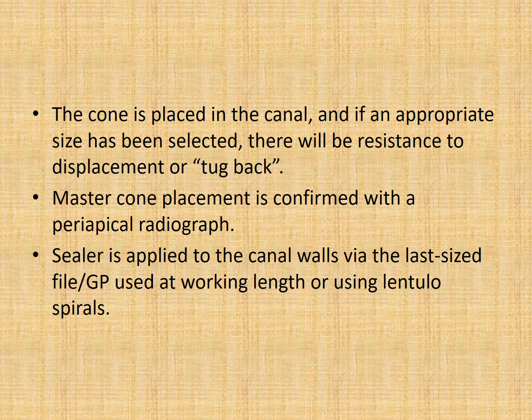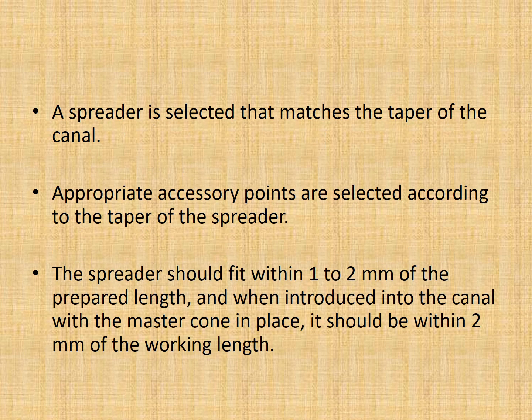Sealer is then applied to the canal walls via a large size file or GP up to the working length. You can also use lentillo spirals to coat the sealer to the walls. A spreader is then selected which matches the taper of the canal. Appropriate size accessory points are selected according to the taper of the spreader, though I prefer to use very small GP cones like size 15 and 20 and try to compact as densely as possible.